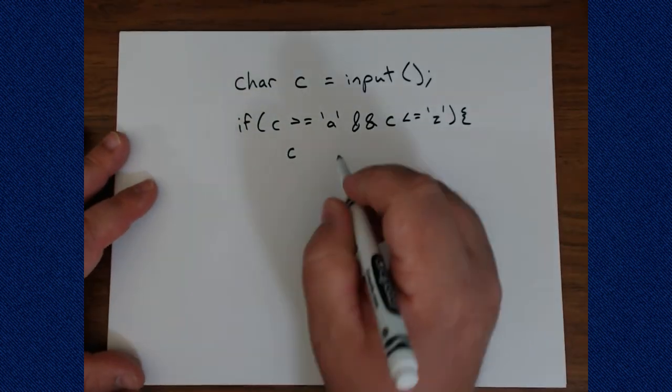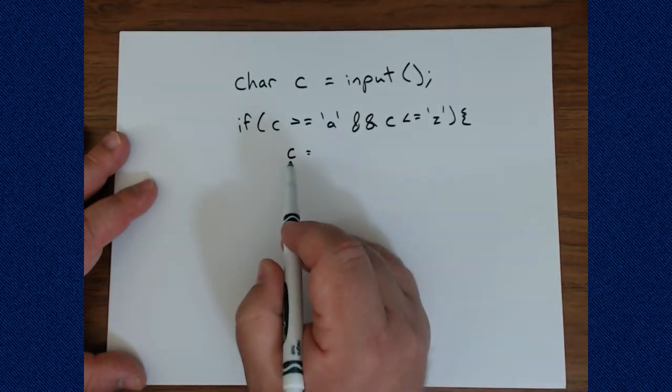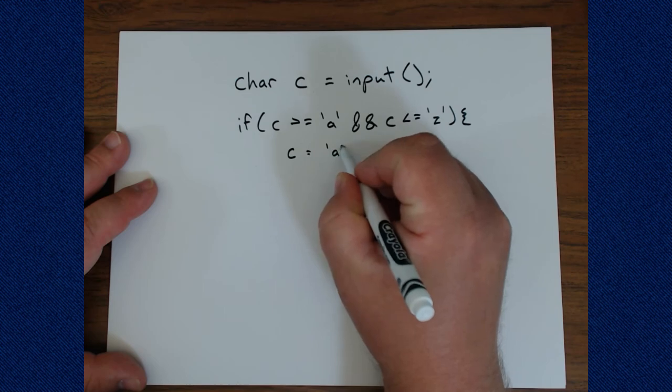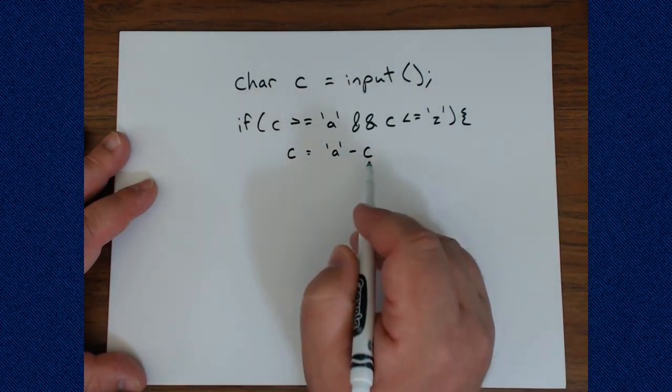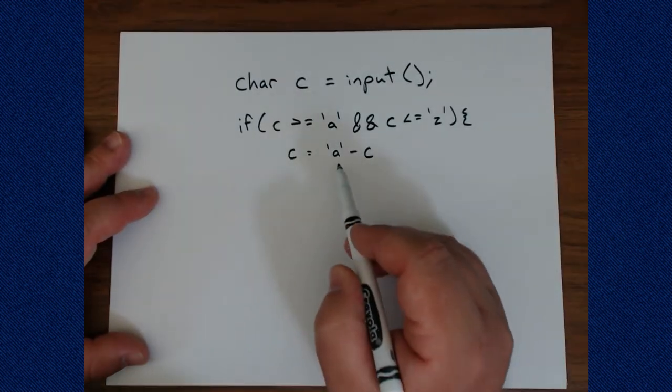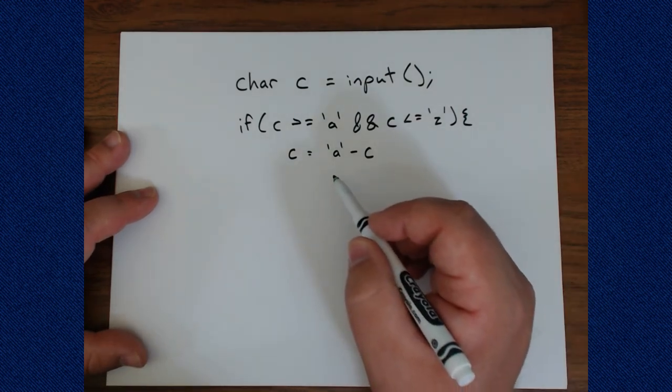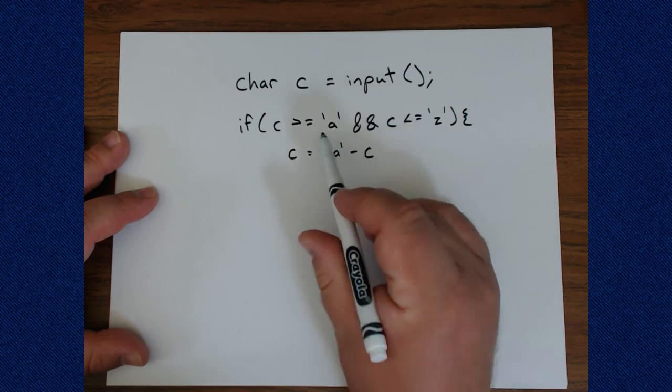So we can say c is going to be equal to, first, how far in is this lowercase letter? Well, that's lowercase a minus our character c. This is not the letter c, it's just the name of our variable. So this tiny piece of math is now calculated how far away from the lowercase letter a is this lowercase letter. And we know it's lowercase because of these conditions.